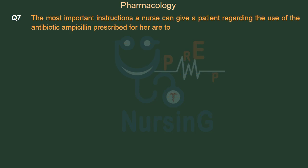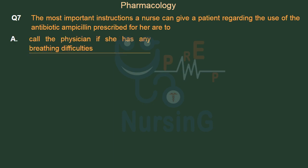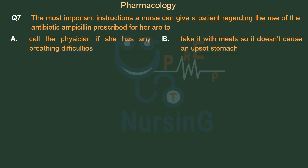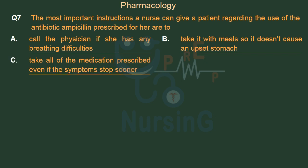The most important instructions a nurse can give a patient regarding the use of the antibiotic ampicillin prescribed for her are — Option A: Call the physician if she has any breathing difficulties. Option B: Take it with meals so it doesn't cause an upset stomach. Option C: Take all of the medication prescribed even if the symptoms stop sooner. Option D: Not share the pills with anyone else. The right answer is Option C — take all of the medication prescribed even if the symptoms stop sooner.